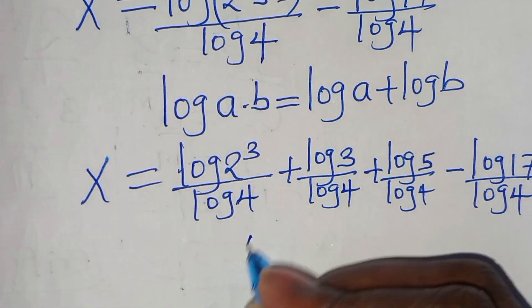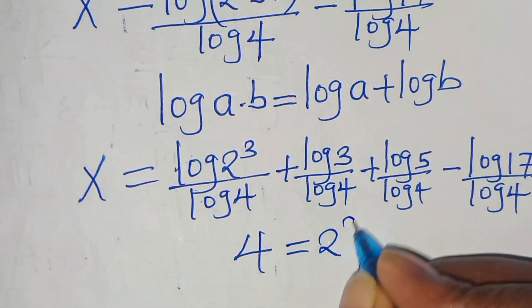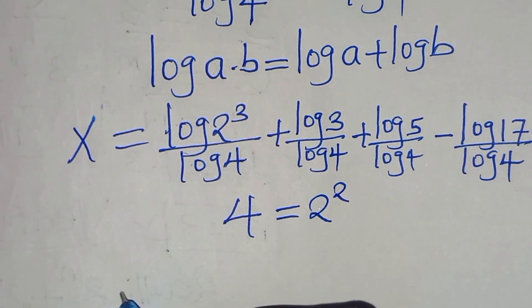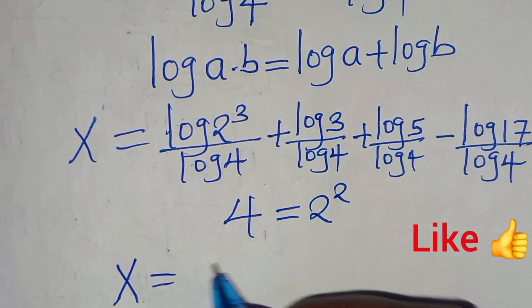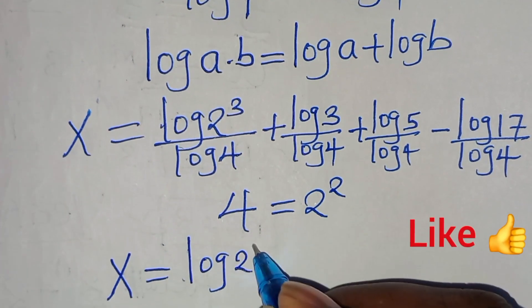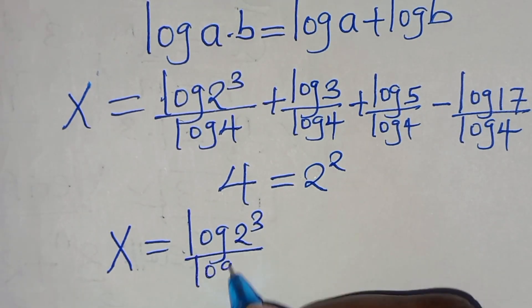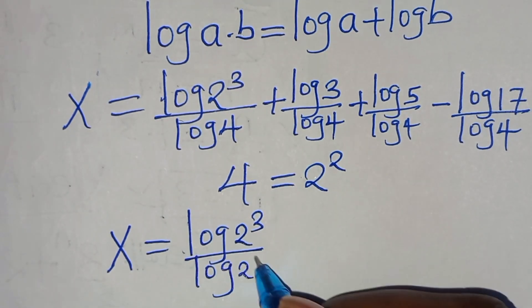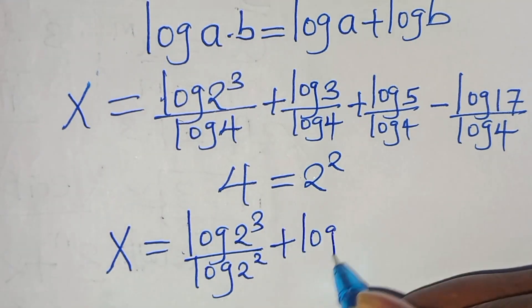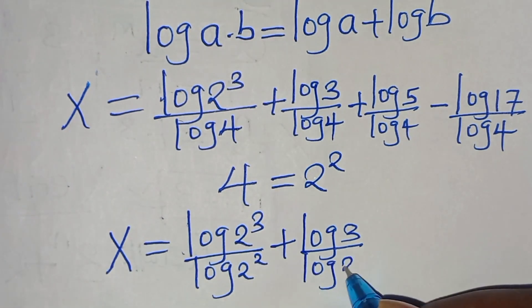The next step: we can express 4 as 2 to the power of 2. This implies x equals log(2³) over log(2²), plus log 3 over log(2²), plus log 5 over log(2²), subtract log 17 over log(2²).